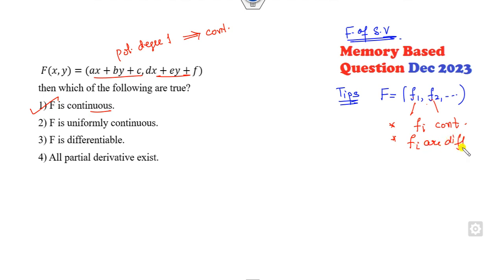When is it said to be differentiable? If F_i's are differentiable. Now clearly, again it's a polynomial. Every polynomial is differentiable, so this option is also correct. If all the partial derivatives exist, so if the function is differentiable, we all know the function is differentiable, it means the function has partial derivatives exist.